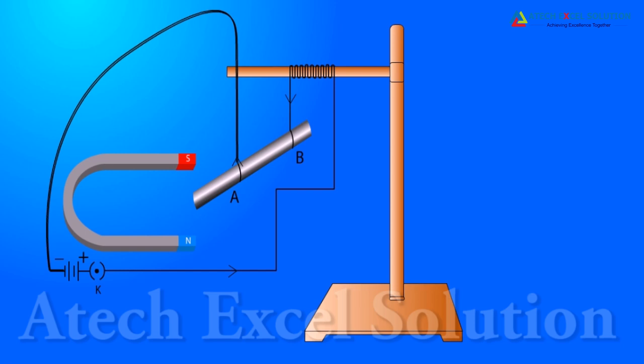When the direction of current is reversed or the direction of the field is changed, the direction of force acting on the rod gets reversed. Hence, direction of force on conductor depends upon the direction of current and the direction of magnetic field. Displacement of rod is more when the direction of current is at right angle to the direction of magnetic field.